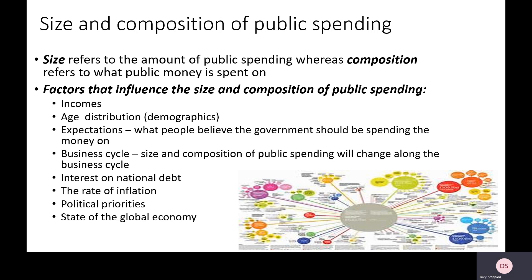The business cycle also matters — we've touched on this with incomes. In recessions when unemployment is high, there's a growing need for more government spending; when unemployment is low, less is needed. Interest on national debt is also relevant: if interest rates on national debt are very low, that should encourage growth in government spending, possibly on infrastructure — it could be a good time to borrow to upgrade it. With high inflation, there may be a growing need to raise unemployment benefits, pensions, and public sector wages.